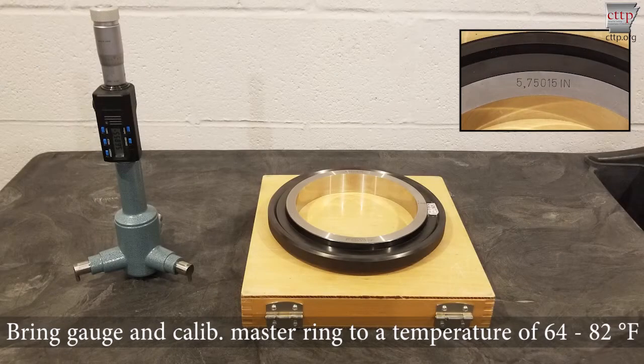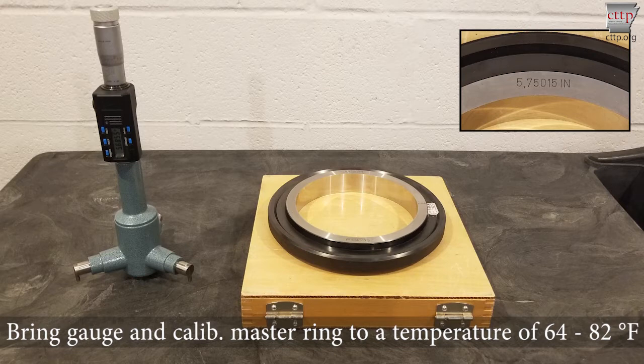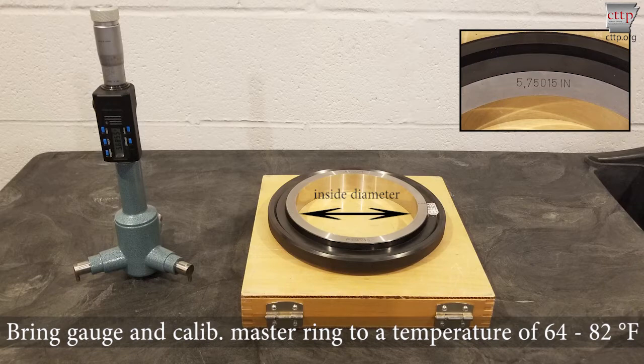To verify the measurement readings of a three-point internal bore gauge, bring the internal bore gauge and calibrated master ring to a temperature of 64 to 82 degrees Fahrenheit.